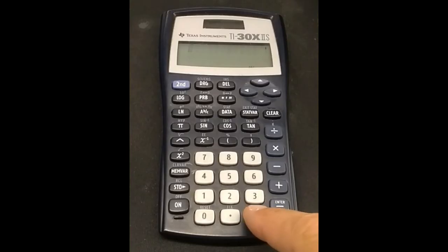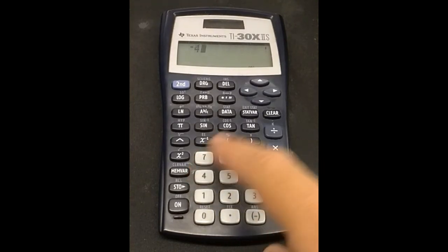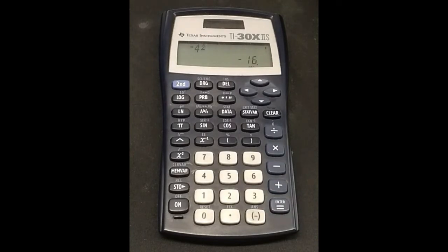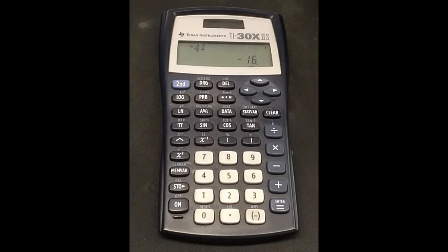Try it in the calculator. The button for taking the square usually looks like this. So enter negative 4 squared equals negative 16. Now what's going on? Again, this is an order of operations issue.